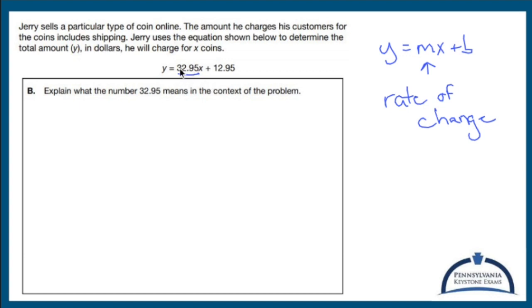And the way that I know that is this is an amount of money in dollars. Y is the total amount. And specifically, rate of change is given to you as the change in Y value over the change of X.